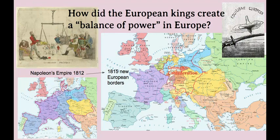This leads us to the question of the balance of power. How did these European kings and their deputies create a balance of power in Europe? Effectively, they took what was once Napoleon's empire and turned it into the new European borders that we are almost familiar with today. Much like the gentleman weighing the scales on the left-hand side here, the European nations wanted to make sure that there were powerful countries that could balance out the power of France, so that French aggression would no longer be as much of a problem.